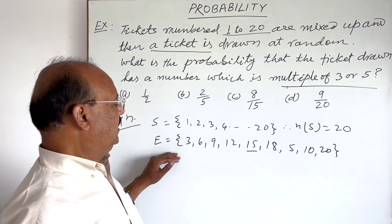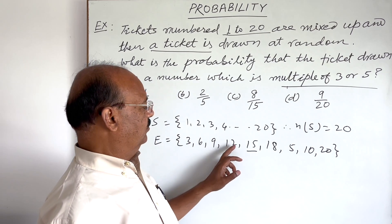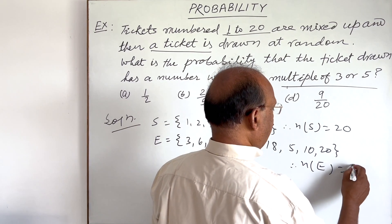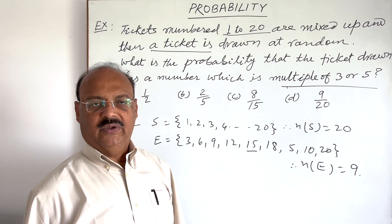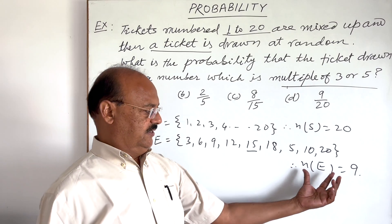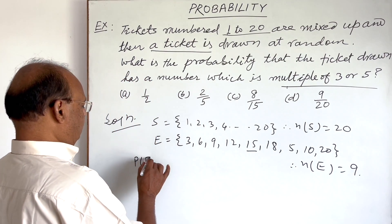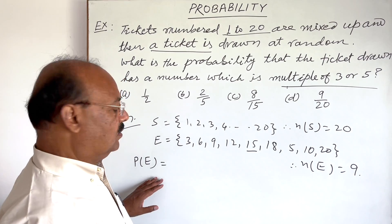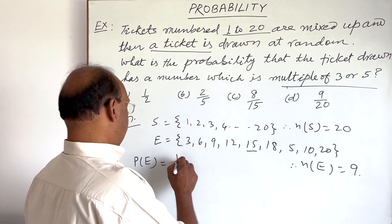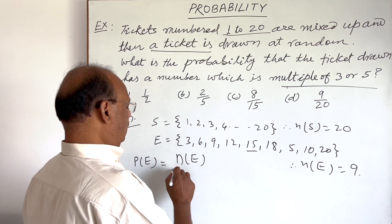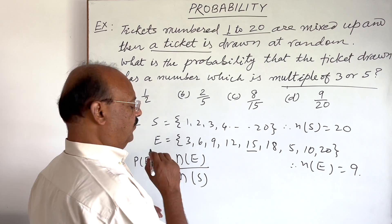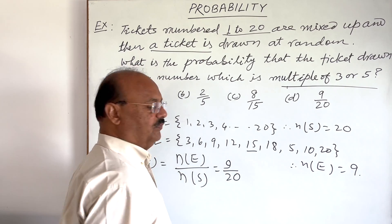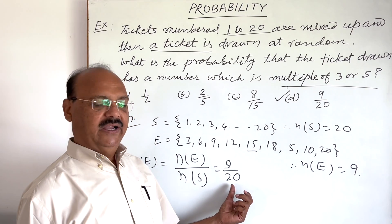The number of elements in this event — counting: 1, 2, 3, 4, 5, 6, 7, 8, 9 — so NE is equal to 9. Now we have to find the probability of this event using the formula NE upon NS. Here NE is 9 and NS is 20, so the probability is 9 by 20.